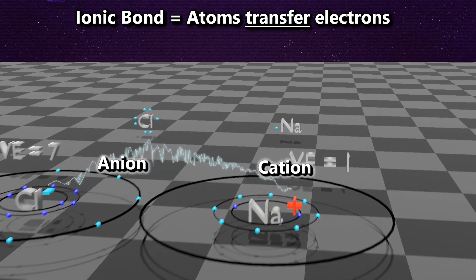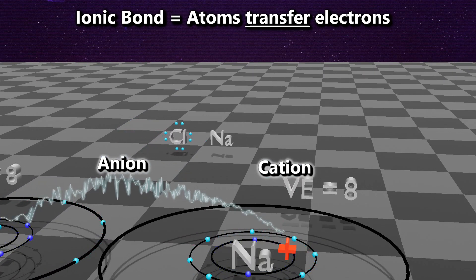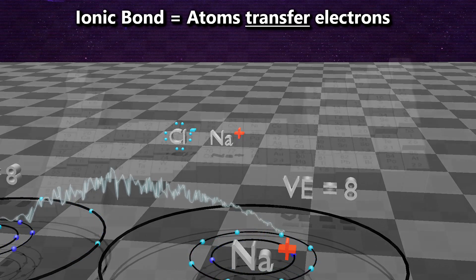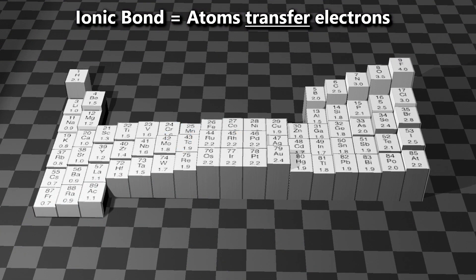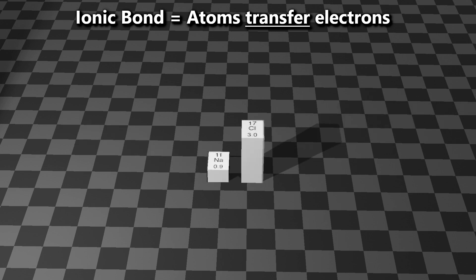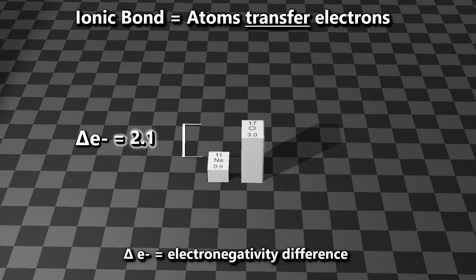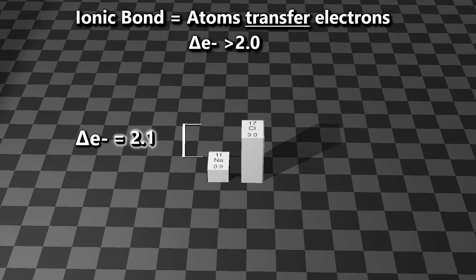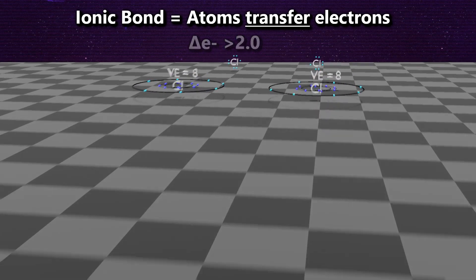The Lewis dot structure is a simpler way to visualize this, showing chlorine stealing the electron from sodium, with chlorine becoming the anion and sodium the cation. Looking at the Pauling scale, the difference in electronegativities between chlorine and sodium is 2.1, which tells us chlorine has a stronger pull for the electron than sodium. All ionic bonds occur with electronegativity differences of 2.0 or more.